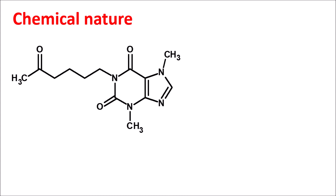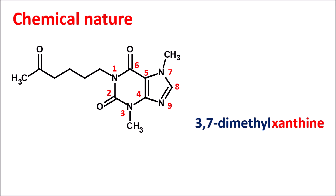Now let us see the chemical structure of Pentoxyphilin. We can clearly observe the methylxanthine ring system. Starting the numbering from nitrogen: positions one through six form the six-membered ring, then seven, eight, and nine. This is the common numbering system for xanthines. Pentoxyphilin has methyl groups at the third and seventh positions, so it can be written as 3,7-dimethylxanthine. The first position has a long side chain — numbered one through six — making it a hexyl chain with an oxo group at the fifth position. So it can be written as 1-(5-oxohexyl), which gives the simple name of Pentoxyphilin.